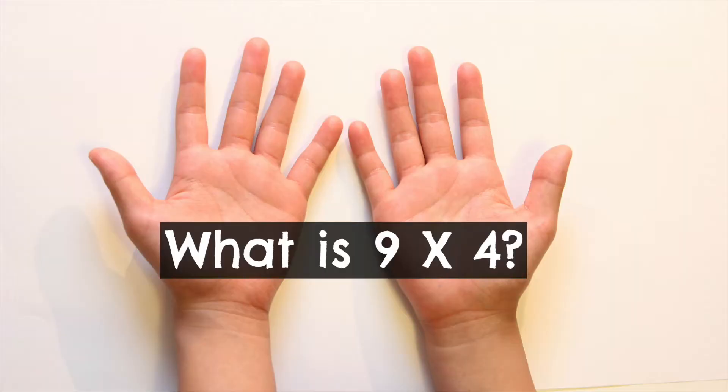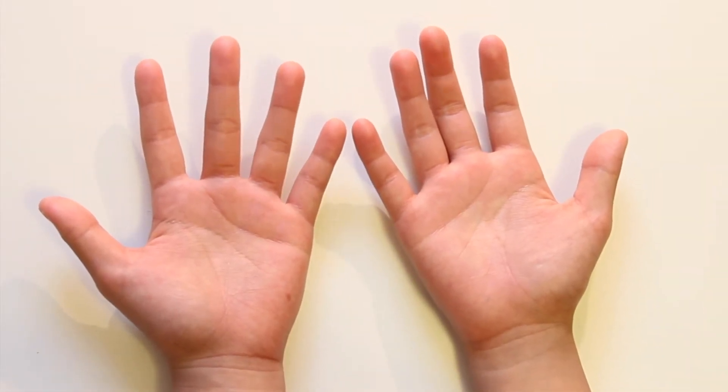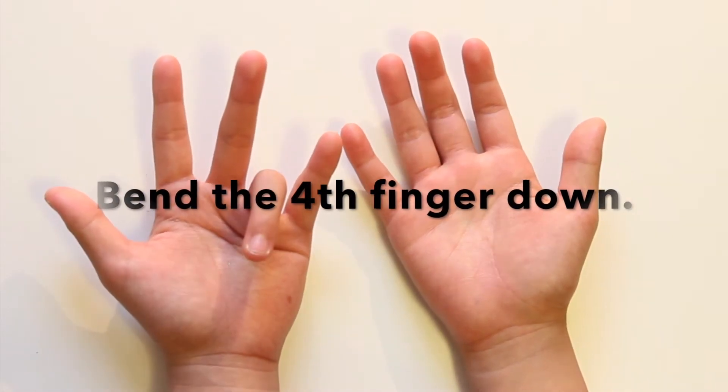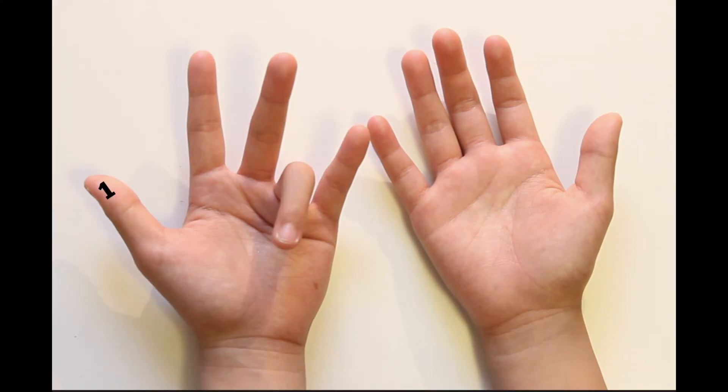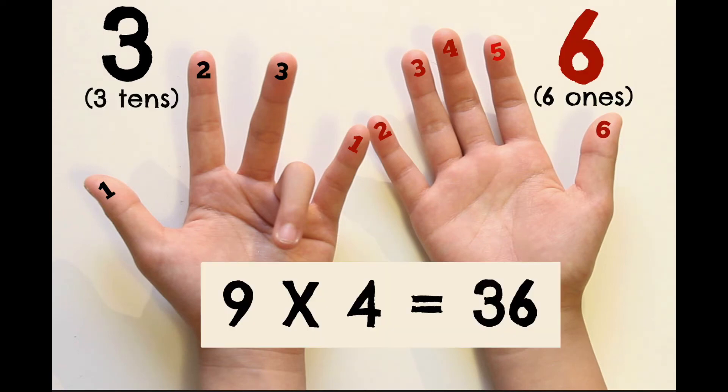Got it? Let's try it out using 9 times 4. Hands in front. 9 times what? 4. Bend that finger down. Count fingers on the left. 3. Count them on the right. 6. So the answer is, yep, that's right, 36.